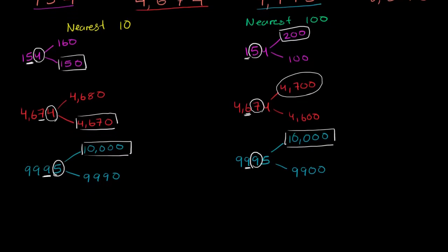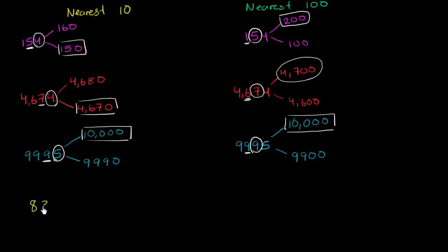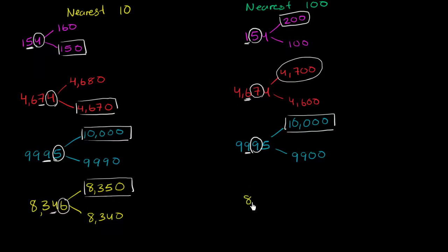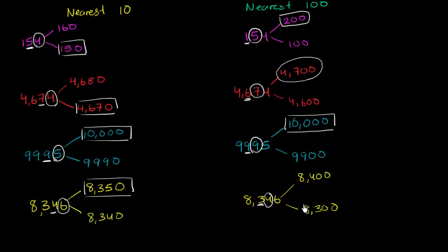Now we have one more: 8,346. The multiple of 10 below it is 8,340, and the multiple of 10 above it is 8,350. If we're rounding to the nearest 10, we look at the ones place. The ones place is five or greater, so we round up to 8,350. Now let's round to the nearest hundred. The multiple of 100 above this is 8,400, and the multiple of 100 below this is 8,300. To round to the nearest hundreds, we look at the tens place. The tens place here is less than five, so we round down to 8,300.